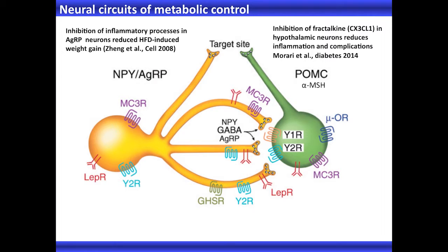Usually when we talk about neuronal circuits involved with metabolic control, we concentrate on two types of neurons: the NPY-AgRP neurons and the POMC neurons. They are very important — if we block the inflammatory processes in the NPY neurons, you can improve metabolic control. Recently it's also been shown that blocking some chemokines in these neurons can improve metabolic control, so we know that neuronal inflammation is very important.